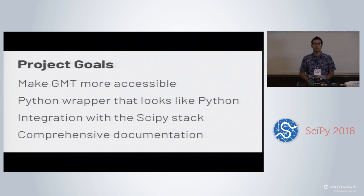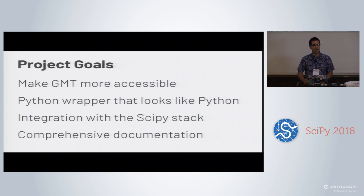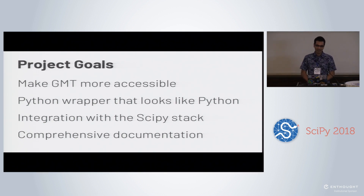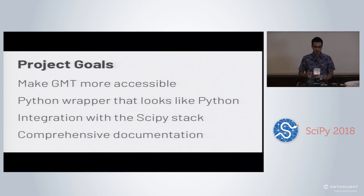Some of the goals of this project: the primary goal is to make GMT more accessible to new users. It's notoriously difficult for new people to pick up the project, so we're trying to make it more accessible on the C side as well as through the Python interface. Part of that means writing a Python wrapper that actually looks like Python code. We're also integrating with the SciPy stack so you can use data loaded with NumPy, Pandas, or XArray and pass that to the plotting library. We also want comprehensive documentation with galleries of examples, tutorials, copy-paste examples, and some sample data built into the software.